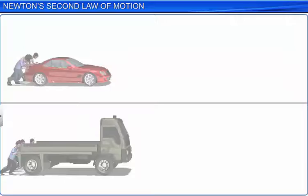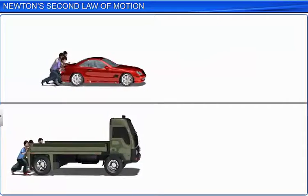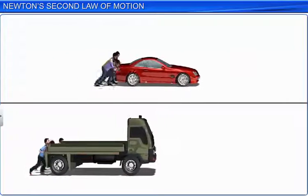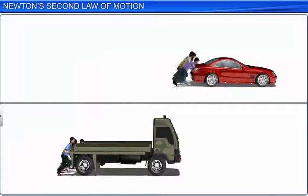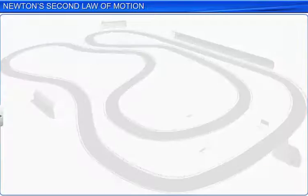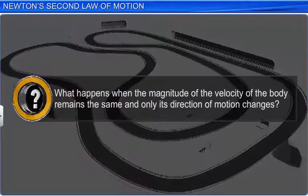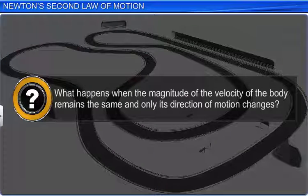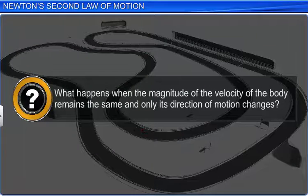In these examples, there was a change in momentum due to a change in magnitude of the velocity of the body. There was no change in the direction of motion of the body. What happens when the magnitude of the velocity of the body remains the same and only its direction of motion changes?